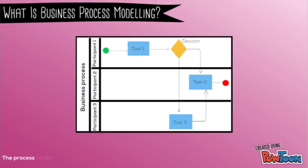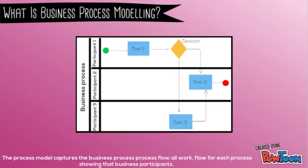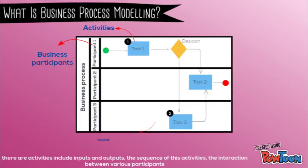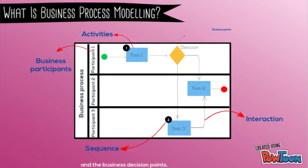The process model captures the business process flow or workflow for each process, showing their business participants, their activities including inputs and outputs, the sequence of these activities, the interactions between various participants, and the business decision points.